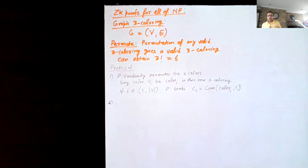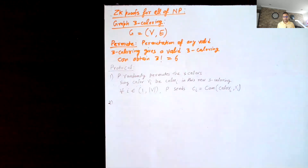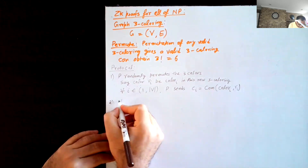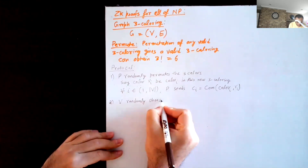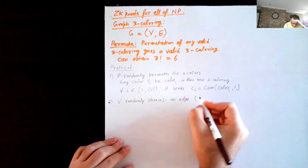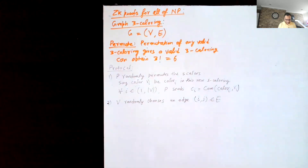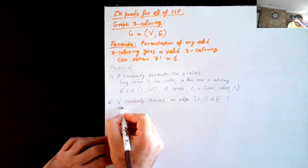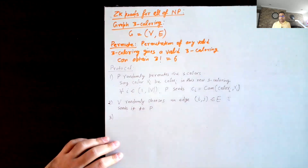Next, the verifier selects one edge at random and asks the prover to decommit and reveal the coloring on that edge. The verifier then checks that the colors are indeed different. So V randomly chooses an edge (i, j) where (i, j) must be in the set of edges E, and sends it to the prover as a challenge.